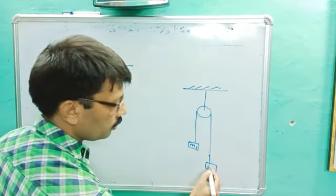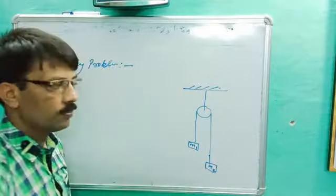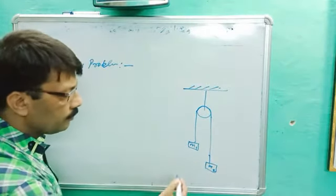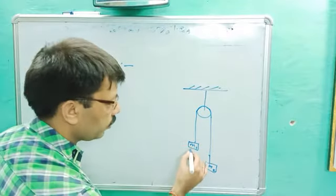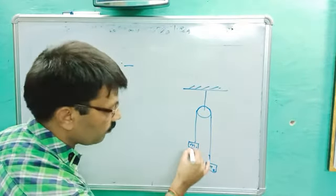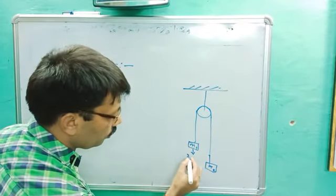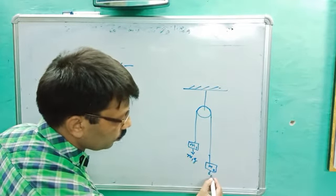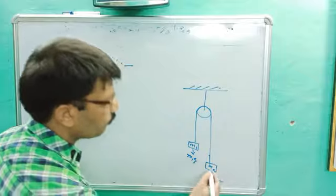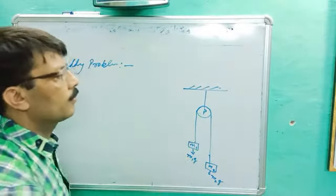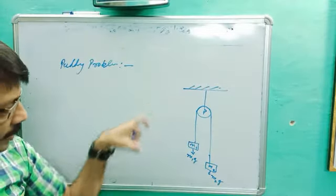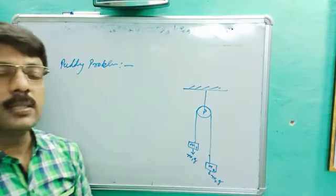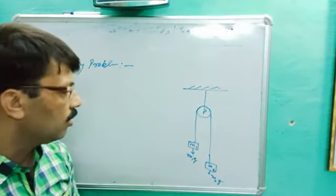This mass is M1 and this mass is M2. They are suspended by the same string. Since they are freely hung, gravitational force F equals M1G acts on the first, and F equals M2G acts on the second. A frictionless pulley P through which a string runs with two bodies of masses M1 and M2 freely hanging.